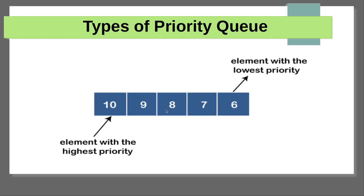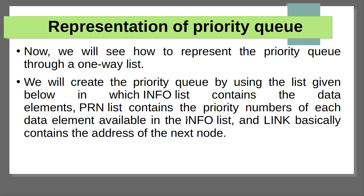Here is another example: 10, 9, 8, 7, 6 — there are five elements in this queue. The 10 is the highest priority element, with the highest value compared to other elements. The 6 is the lowest number compared to other elements, so it will be processed last. This type of queue is called a descending order priority queue.